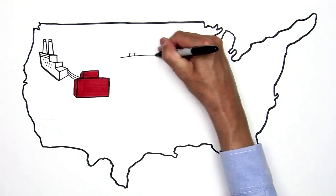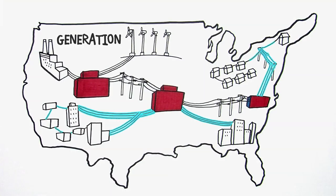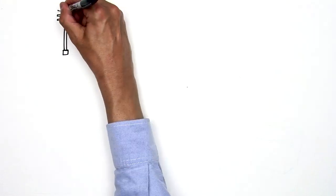America's electric system includes power plants that generate electricity, distribution lines that bring electricity directly to our homes and businesses, and in between, a transmission network that moves the electricity from where it's generated to communities where it's used. Think of it like our highway system.